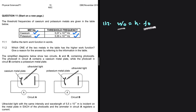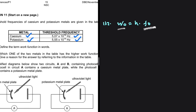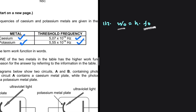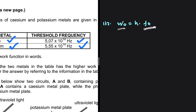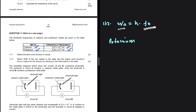Let's look at our two metals, cesium and potassium, and figure out which one has a higher threshold frequency. Potassium has a higher threshold frequency at 5.55 × 10¹⁴ Hz, while for cesium it is 5.07 × 10¹⁴ Hz. So the answer for 11.2 is potassium — it has a higher threshold frequency compared to cesium.